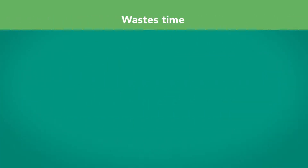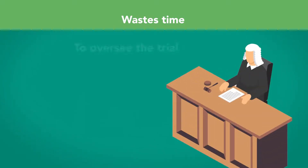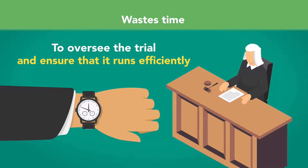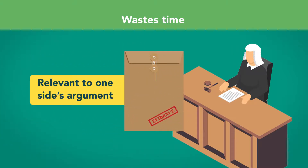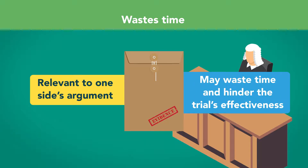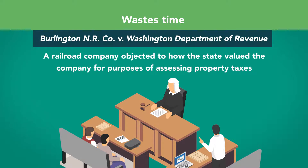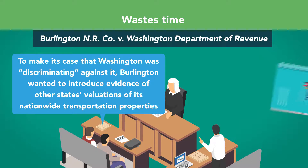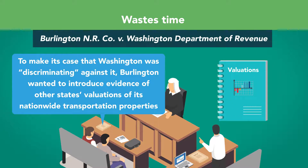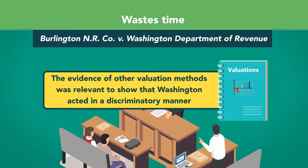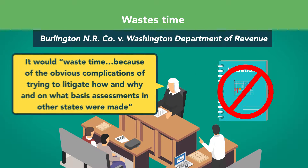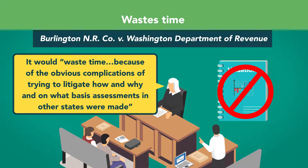Relevant evidence can also be excluded if it wastes time. One of the roles of a trial judge is to oversee the trial and ensure that it runs efficiently. In Burlington Northern Railroad Company v. Washington Department of Revenue, a railroad company objected to how the state valued the company for purposes of assessing property taxes. To make its case that Washington was discriminating against it, Burlington wanted to introduce evidence of other states' valuations of its nationwide transportation properties. The evidence was relevant to show discriminatory conduct, but the court did not allow it, reasoning that it would waste time because of the obvious complications of litigating how, why, and on what basis assessments in other states were made.